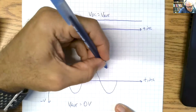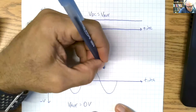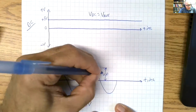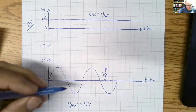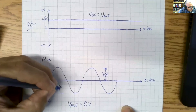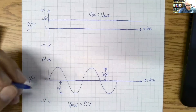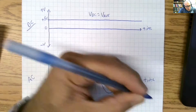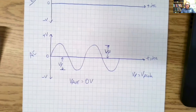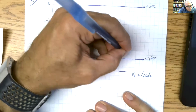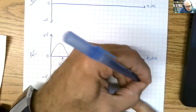In an AC signal we have a quantity known as V peak. This is from the middle of our wave to the positive peak or the negative peak. VP equals V peak. We also have another quantity that goes from the negative peak to the positive peak, and that is called V peak-to-peak.